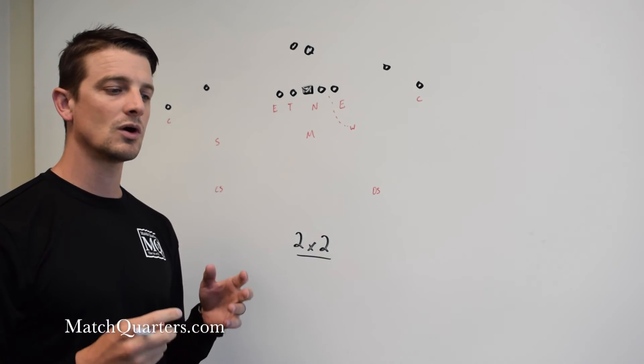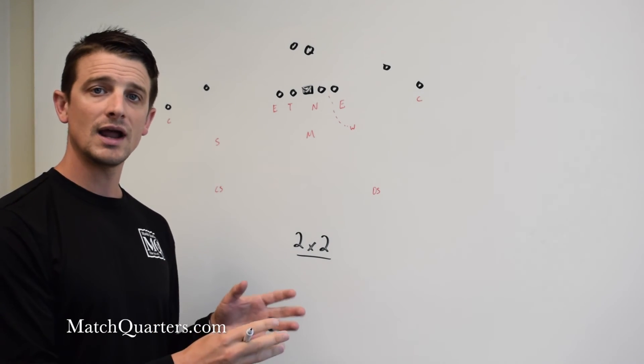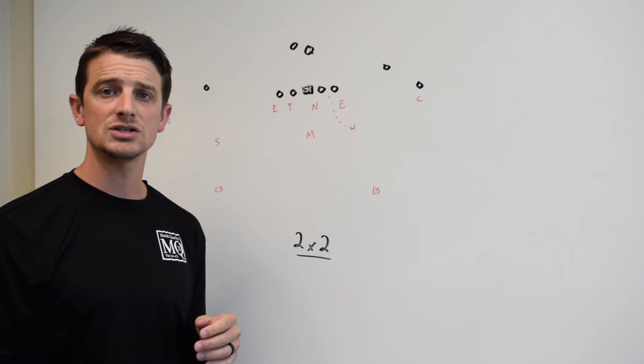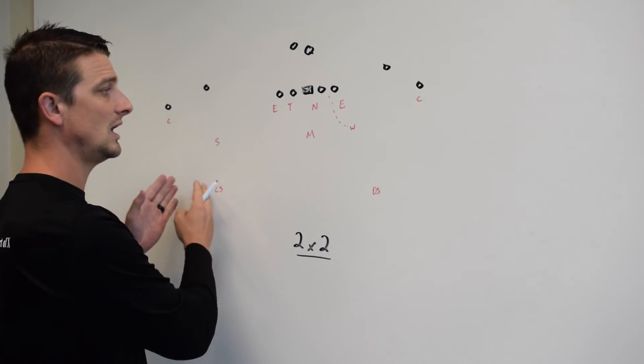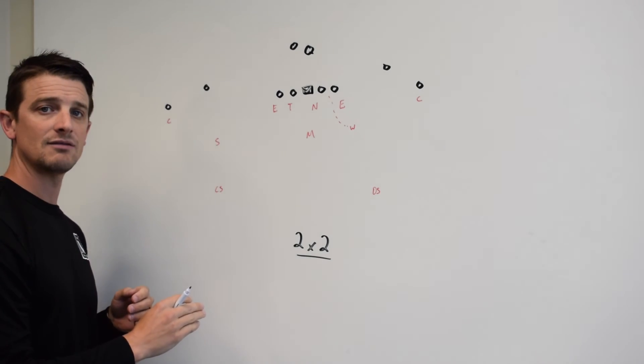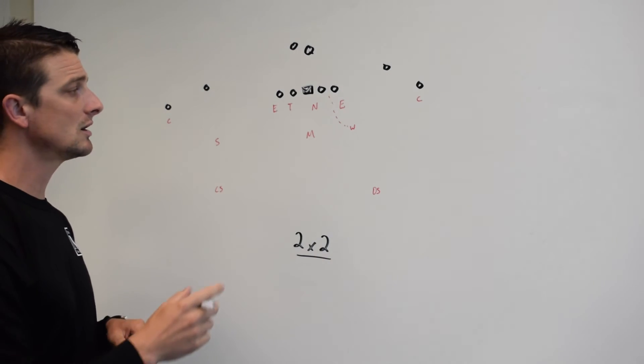So all the cover down is talking to you about, or when you use that term, is you are talking about the relationship between the overhang, which in 2x2 is the Sam and the Will, and which we'll talk about in just a second, to the slot. And in this case, we have a full cover down. Sam is out of the box, he can then get a full cover down. Now let's talk about overhangs.